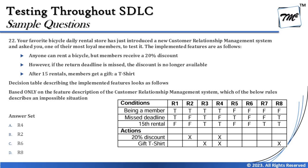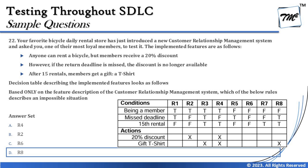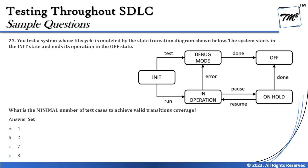The right answer is D — R8, which is the combination of not being a member, missing deadlines, and completing the 15th rental with a t-shirt action, is impossible. This is the way to solve these questions — you need patience and attention to detail. Don't get confused; take it one step at a time, one approach at a time, and move on.